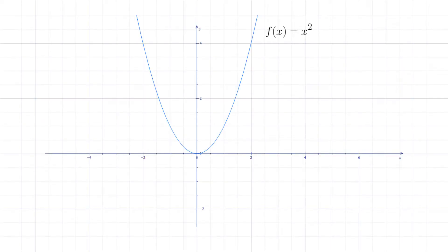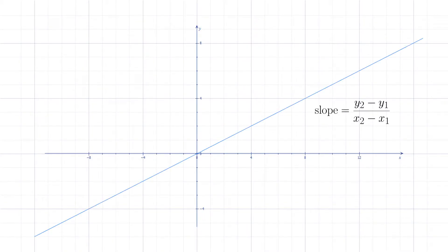Let's take f of x equals x squared as an example. Let's say we want to find the slope at the point (1,1). How can we know what the slope is? We only know how to find the slope for straight lines. We can find the slope of a straight line by plugging two points from the line into the slope formula.